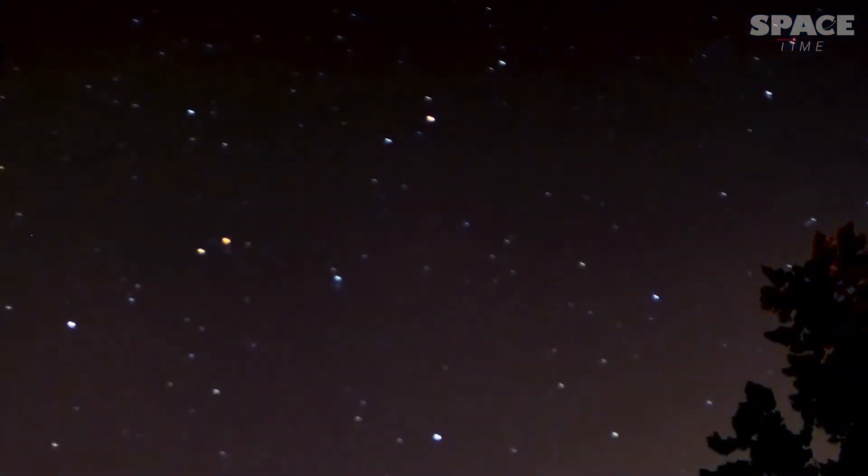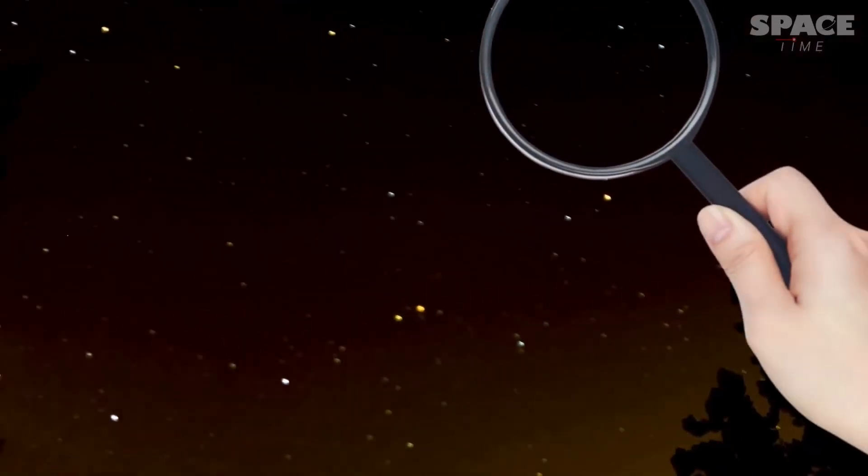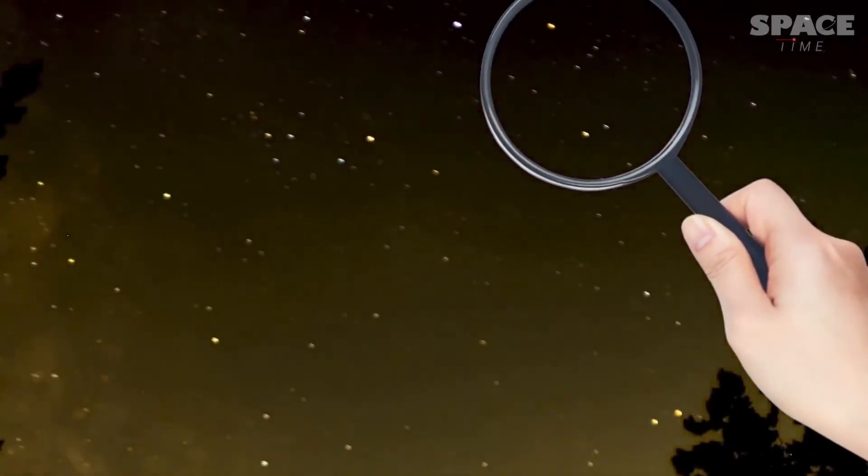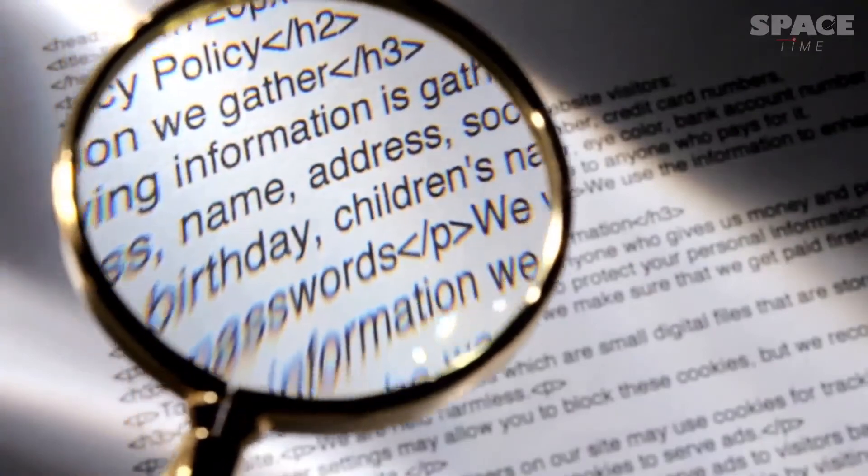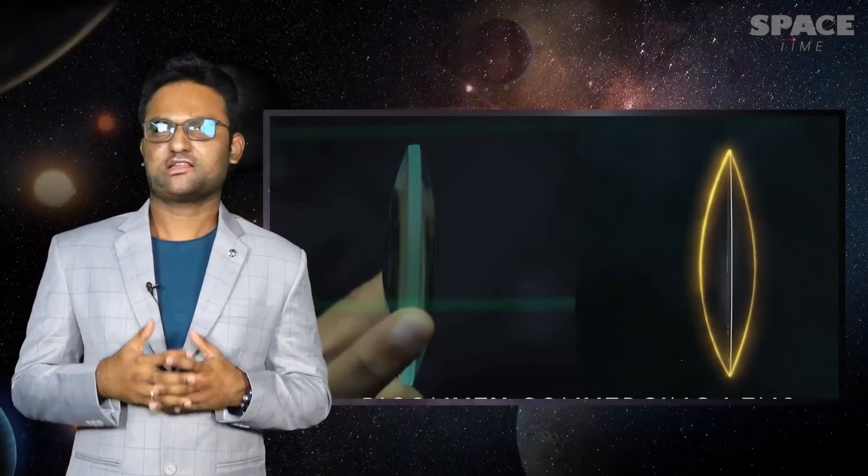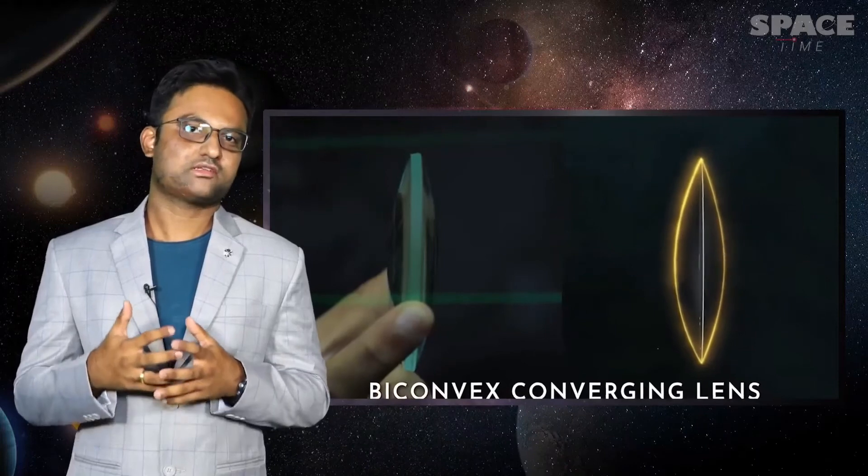But at this point, you might be thinking, why can't we just point a magnifying glass towards the sky and observe celestial objects just like we magnify text on paper? Well, if you look at a magnifying glass lens, it's made of a bi-convex lens.